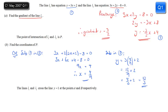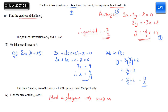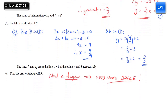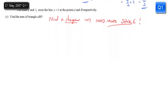So those are the coordinates of P. Finally, we're given that the two lines L1 and L2 cross y equals 1 at points A and B, and we want the area of triangle ABP. For any question asking for the area of a triangle, you need a diagram, and for that we're going to need more space.